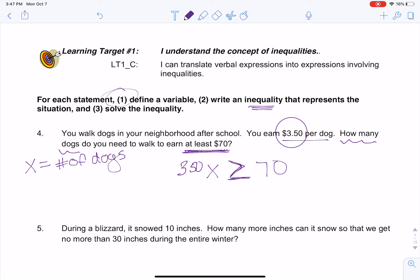Okay, so now I've got a nice little inequality that I can solve, just like I was doing up above. So this is a multiplication problem. I'm going to divide both sides by $3.50. I'm going to get out my handy-dandy calculator. So if I do $70 divided by $3.50, that means that I need to walk more than or equal to 20 dogs. Hopefully not all at once. Okay, so you could even write dogs.